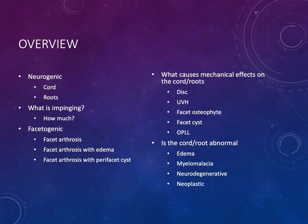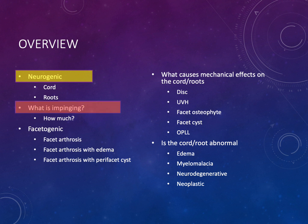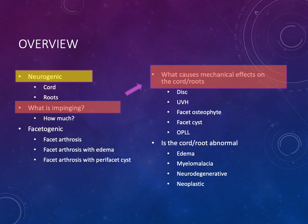When we think about neck pain and cervicalgia, it is primarily thought of as being from a neurogenic cause, which could be due to some problem or abnormality with the cord or the roots. We're trying to determine what is impinging upon the cord or roots. Potential causes include the disc, uncovertebral hypertrophy, facet osteophyte complexes, facet cysts, and ossification of the posterior longitudinal ligament (OPLL). We then look at the cord or root to determine whether it's abnormal — whether it has edema, myelomalacia, neurodegenerative change, or a neoplastic problem — and how much impingement is occurring.